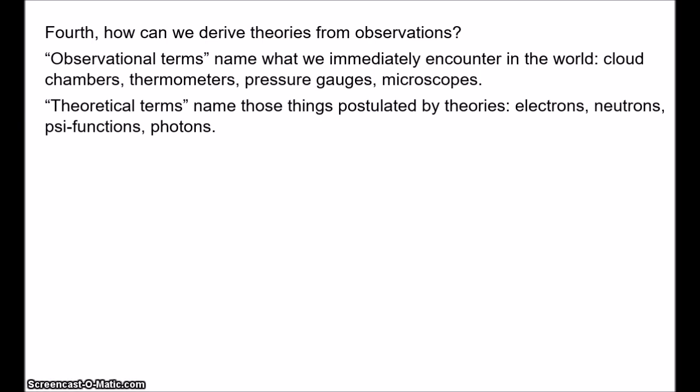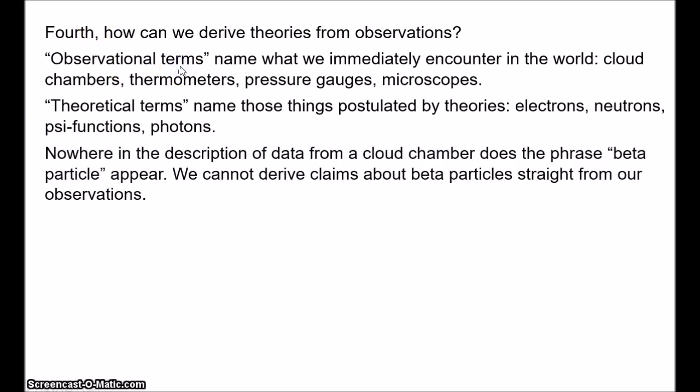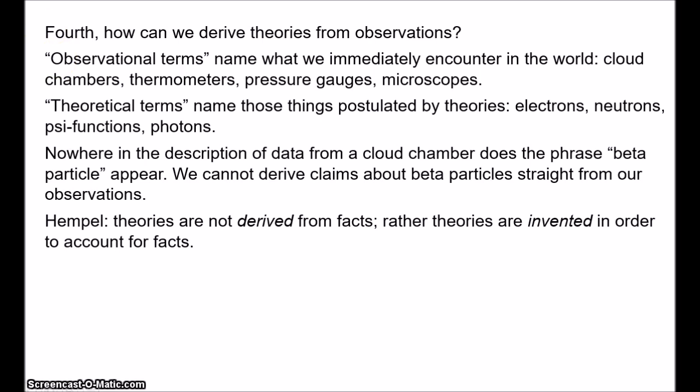You know, so the observations might be tracks in cloud chambers, whereas the theory talks about beta particles. Beta particles are never observed. Nowhere in the description of the data from the cloud chamber does the term beta particle appear. Indeed, the term beta particle does not appear in the description of any data from any experiment. So the move from observations to theory can't be mechanical in the way that the naive inductivist suggests. As Hempel says, theories are not derived from facts, rather theories are invented in order to account for facts. To a large extent, theories involve leaps and guesses, often educated guesses, but guesses nonetheless. Developing a theory requires ingenuity, it requires you to think beyond what's given in the data. And hopefully some of the guesses that you make will be lucky ones.